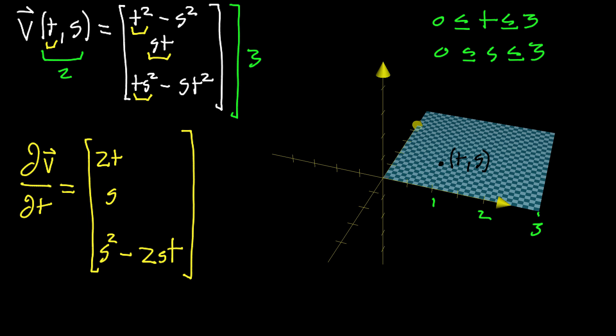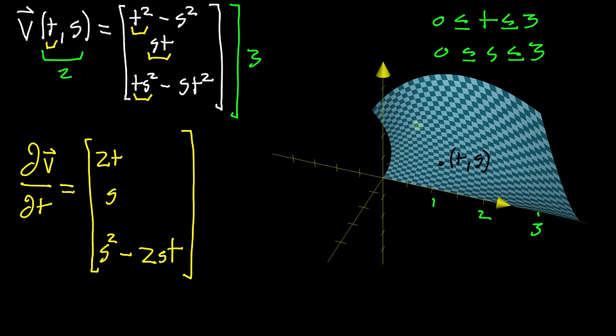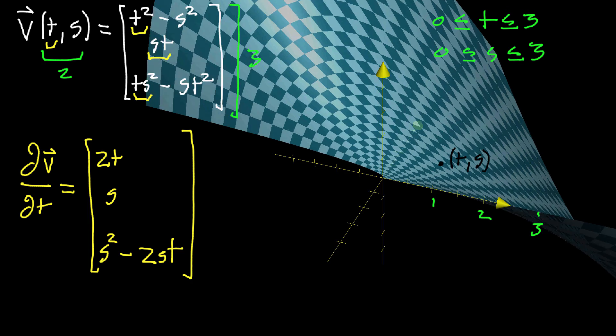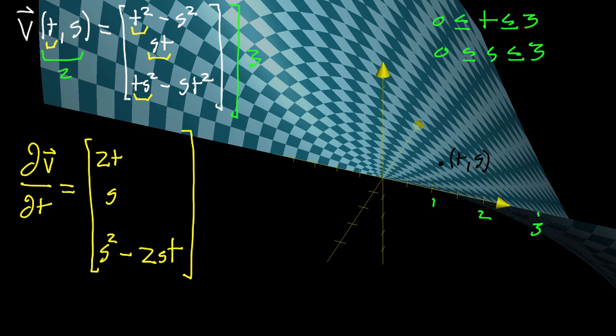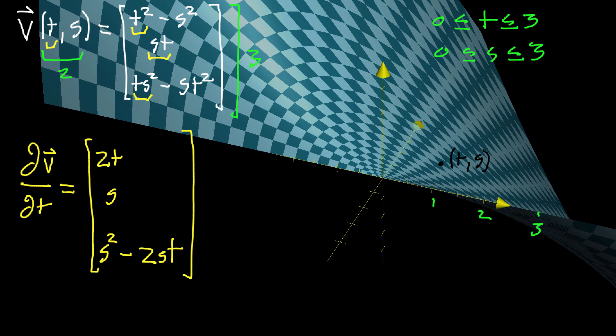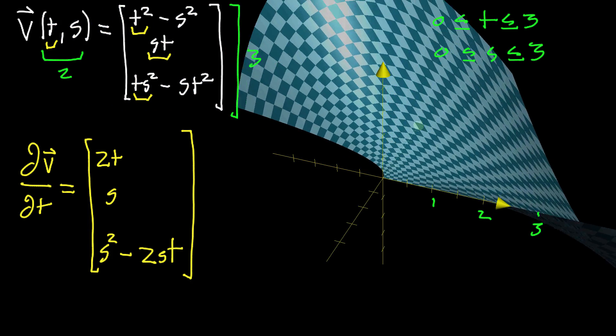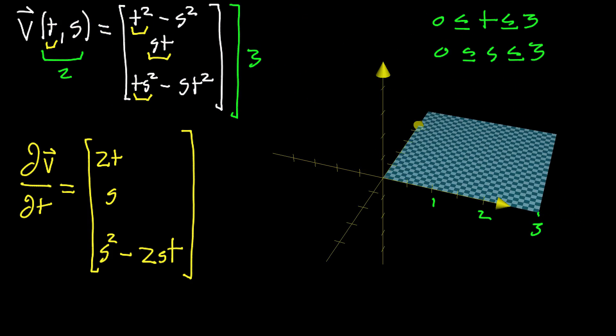And what that looks like when we animate this is each one of those points in our square of TS plane moves to the corresponding output, and you end up with a certain surface. And just to make it a little more concrete what's actually going on here, let's focus in on just one point, and we'll focus in on this point not just for the function visualization, but for the partial derivative as well.